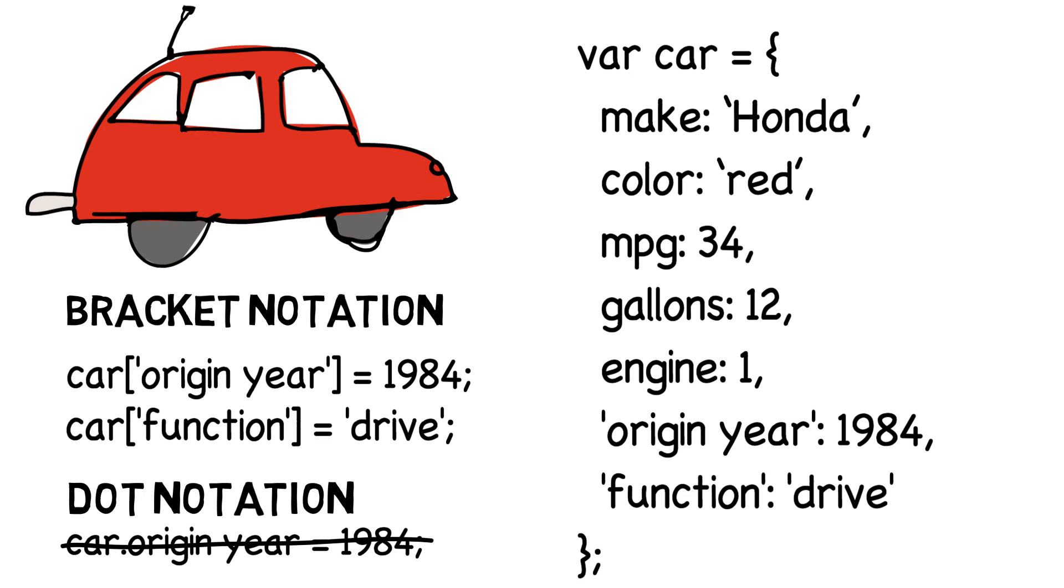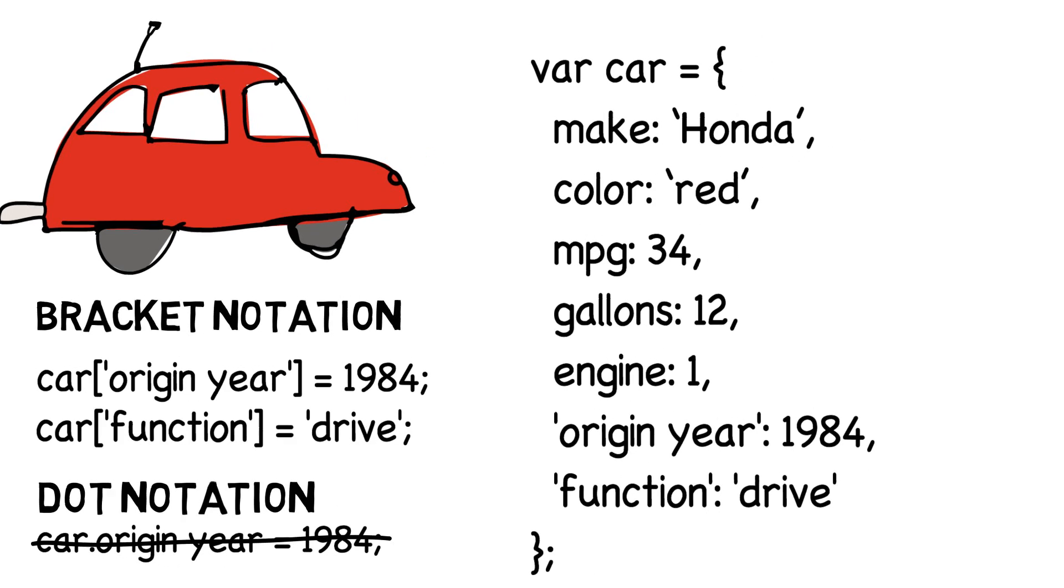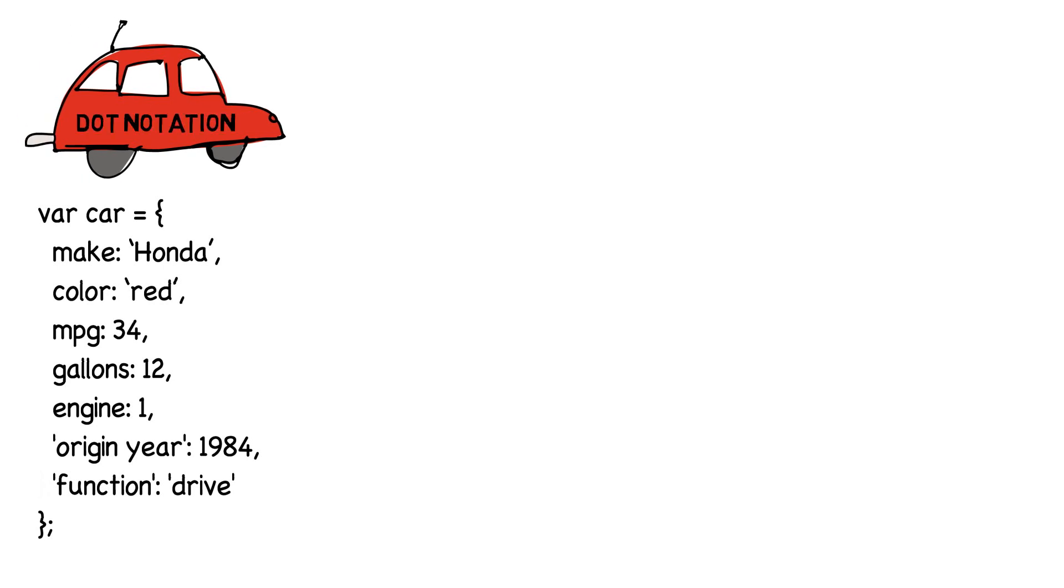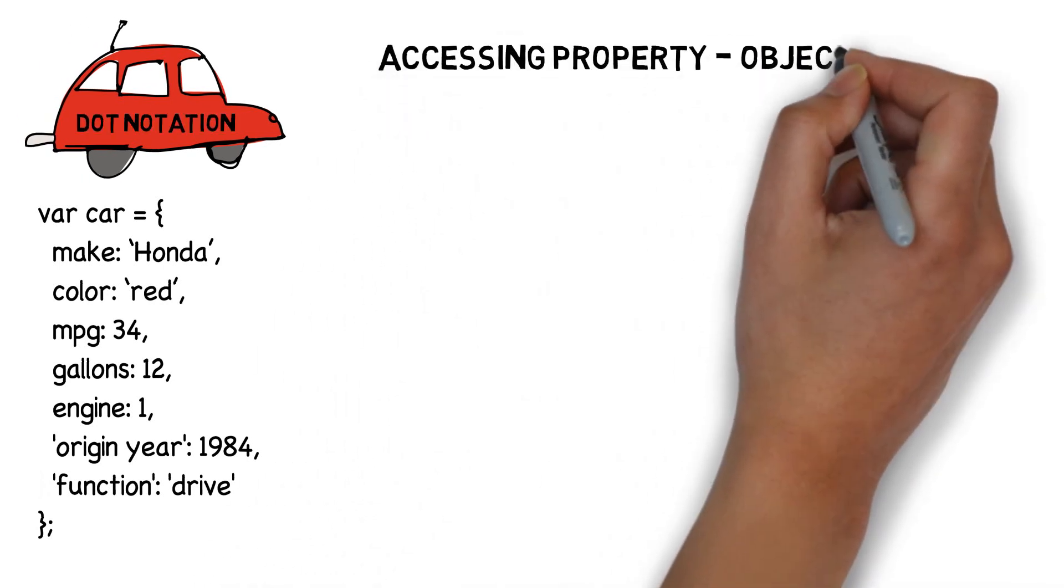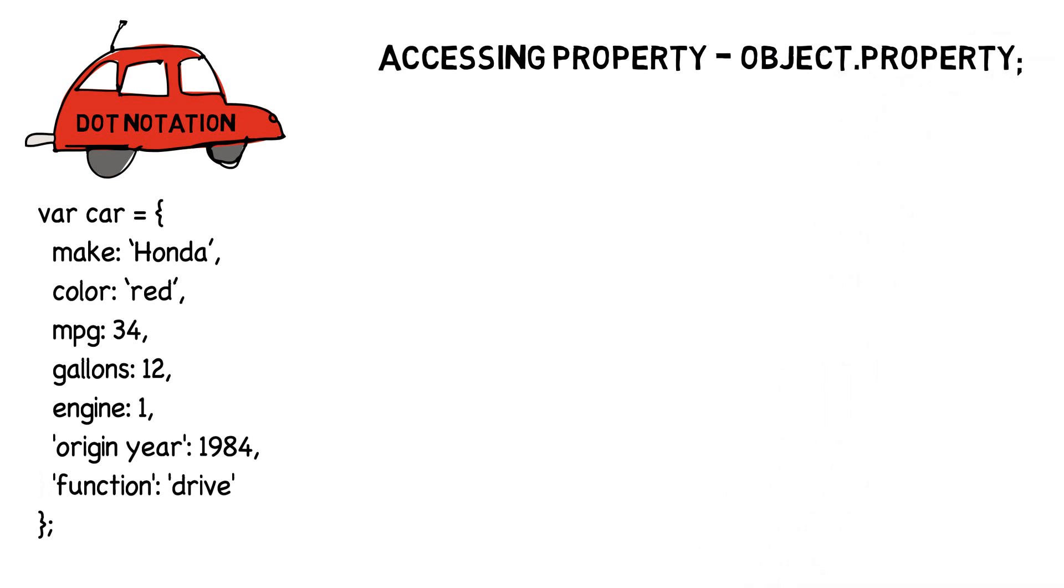Now, let's return to our story of a mechanic trying to access property values from the car object. Let's start with dot notation. To access a property or a method of an object with dot notation, you use the name of the object, followed by a dot, then the name of the property or method you want to access.